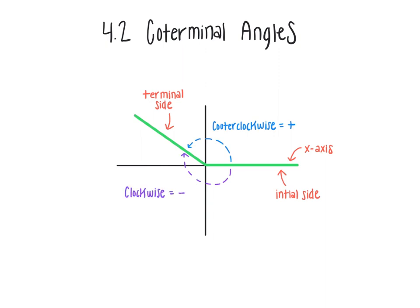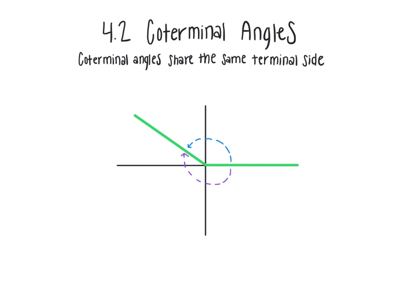So now this leads us into what a coterminal angle actually is. According to the definition, coterminal angles are angles that share the same terminal side. Taking a look at the green angle that I've drawn here on my quadrant plane, I'm going to go ahead and assign a value to it.